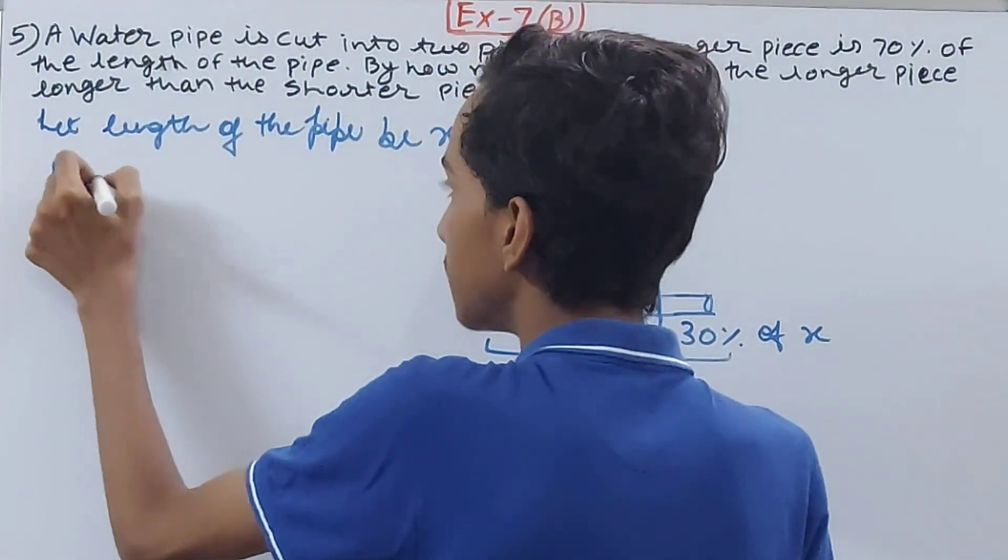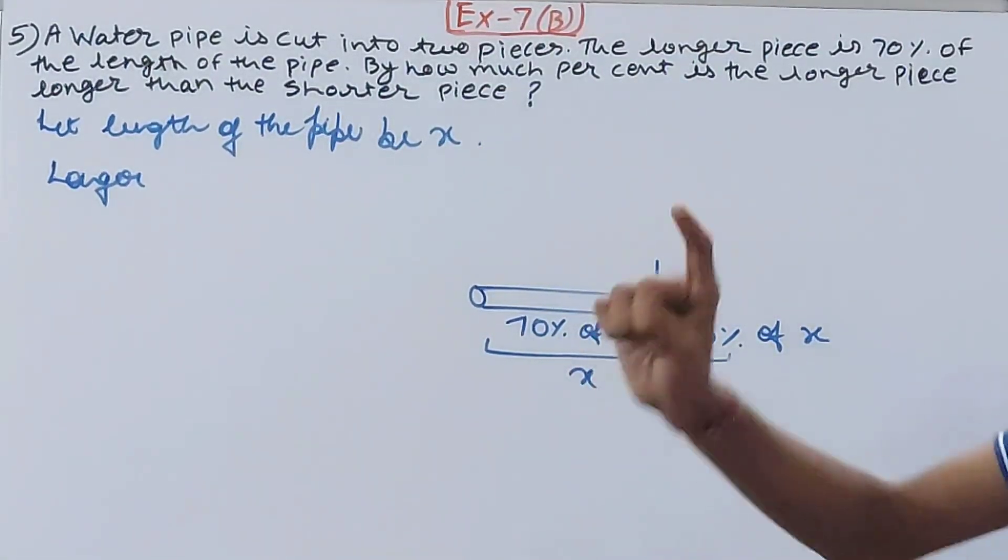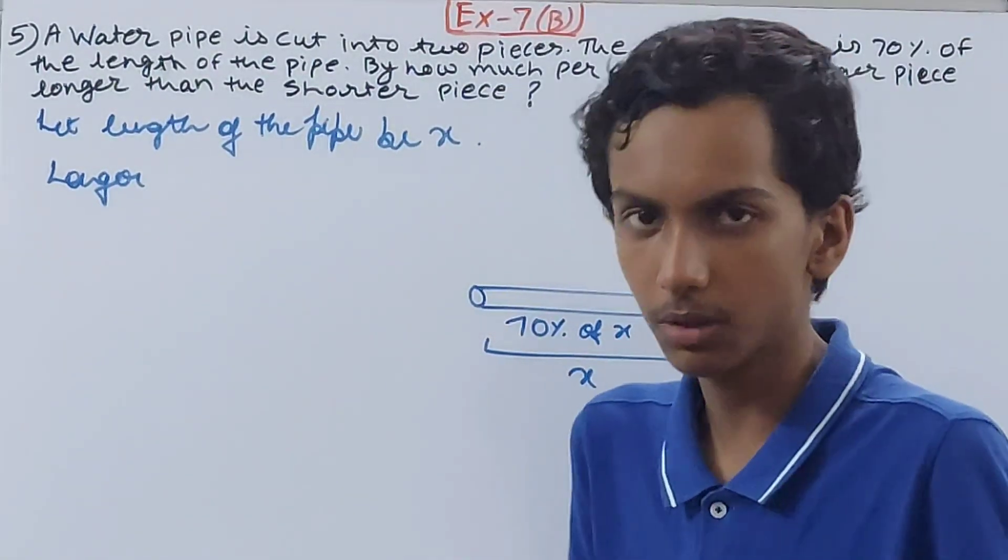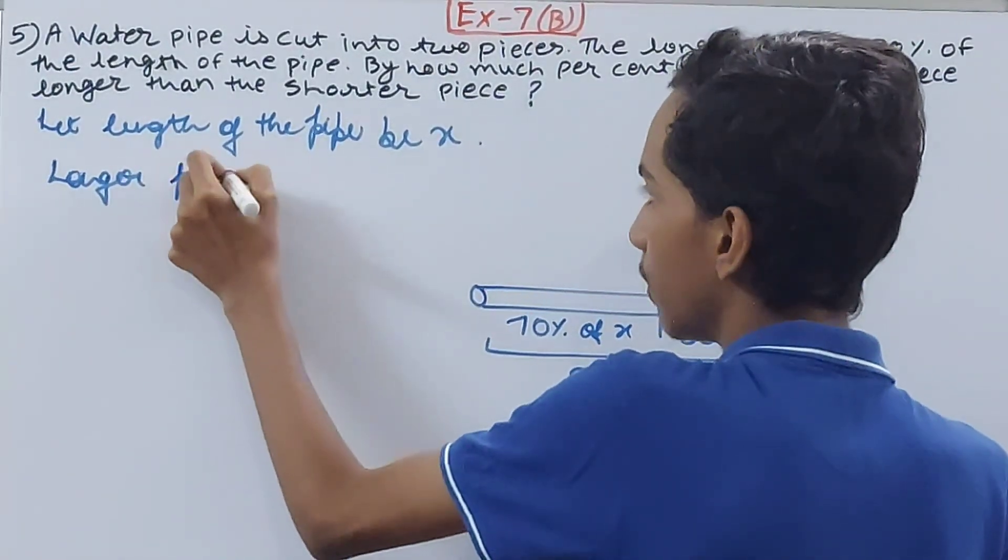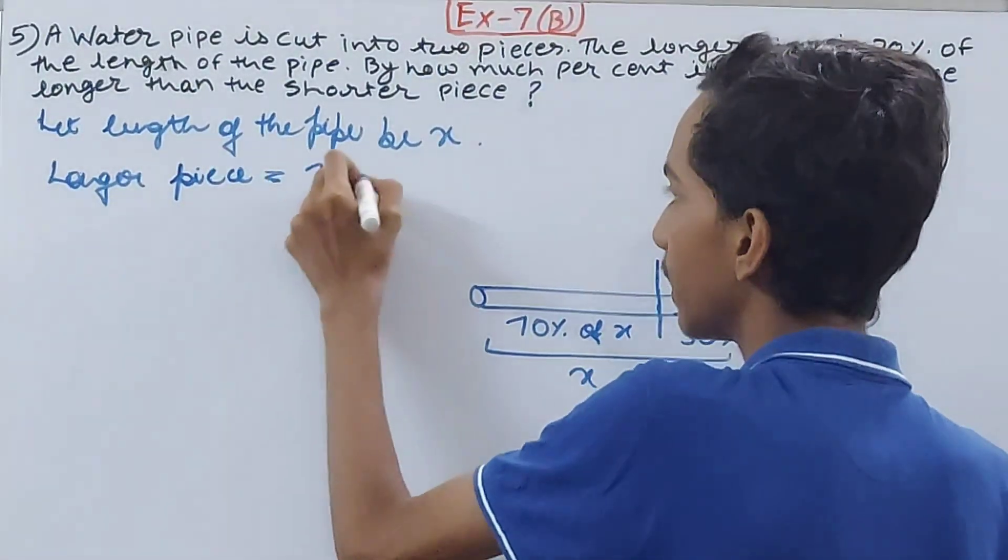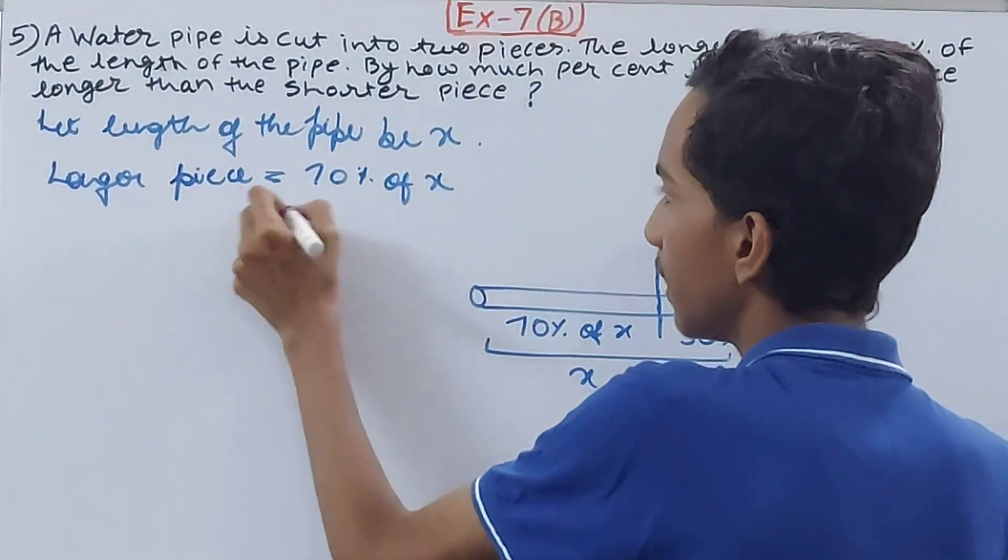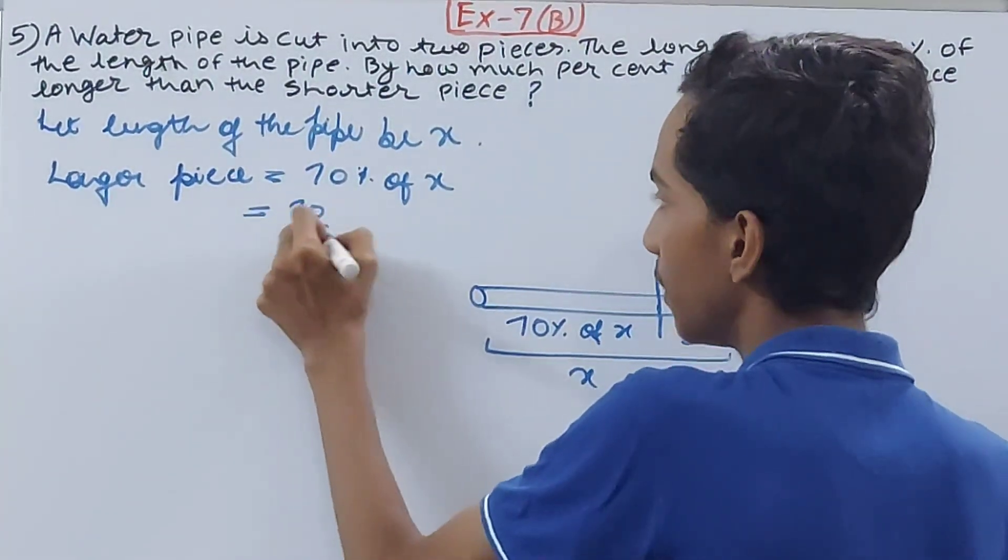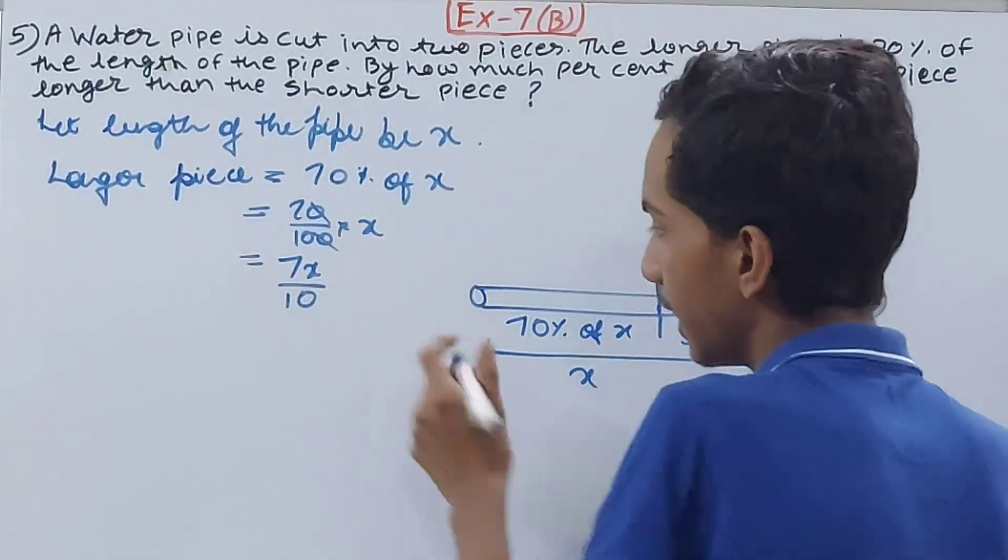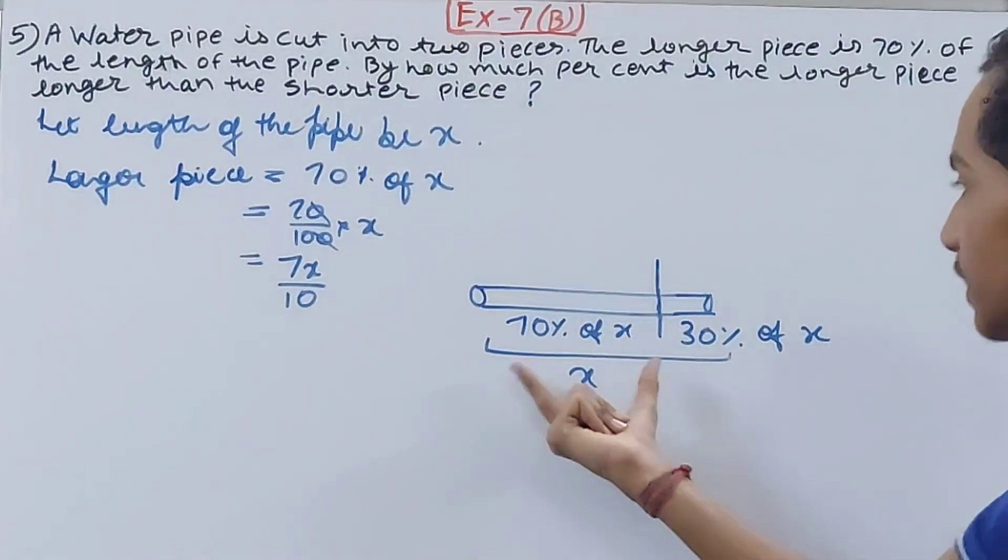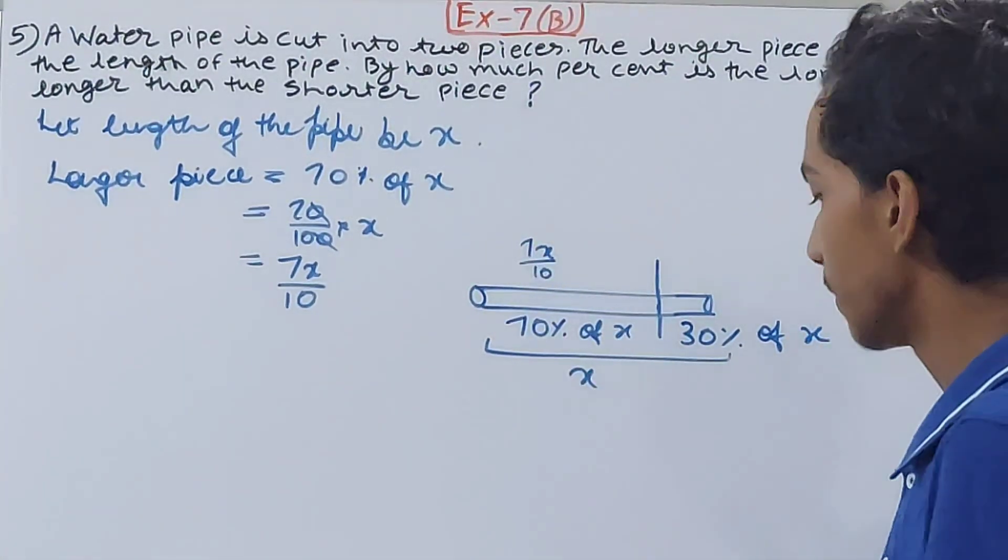Let's call the 70% one the longer piece, the 30% one the shorter piece. So the longer piece is 70% of x, that you can write down as 70/100 × x. Cancel, so you have 7x/10. That means this longer piece is representing 7x/10.